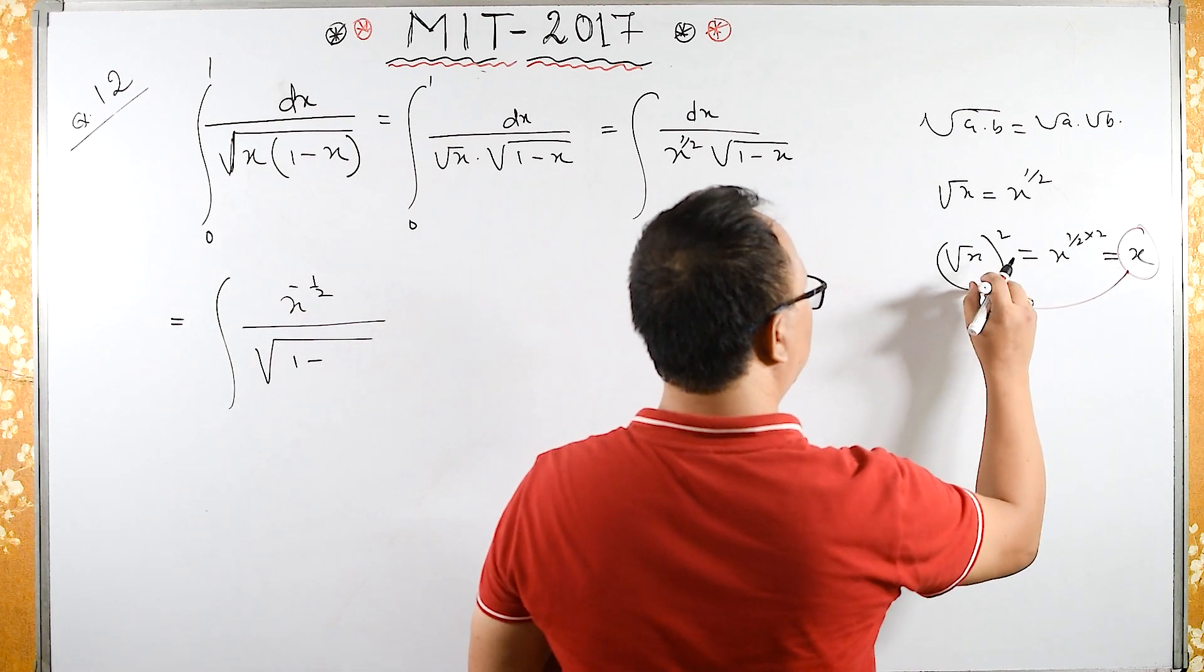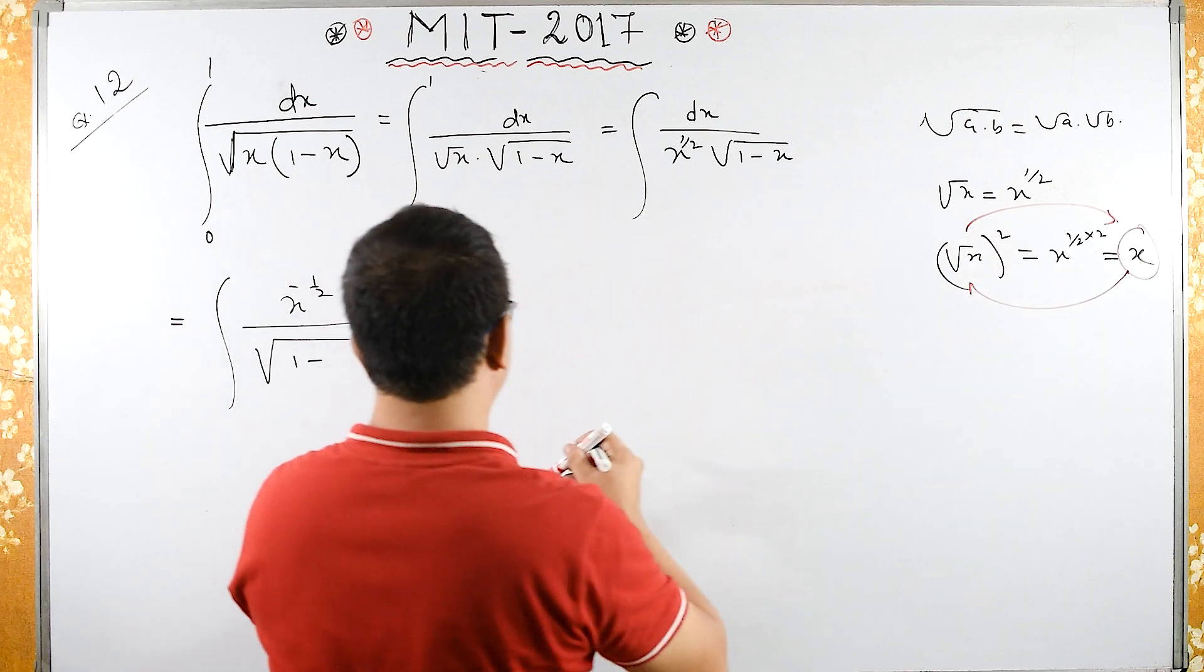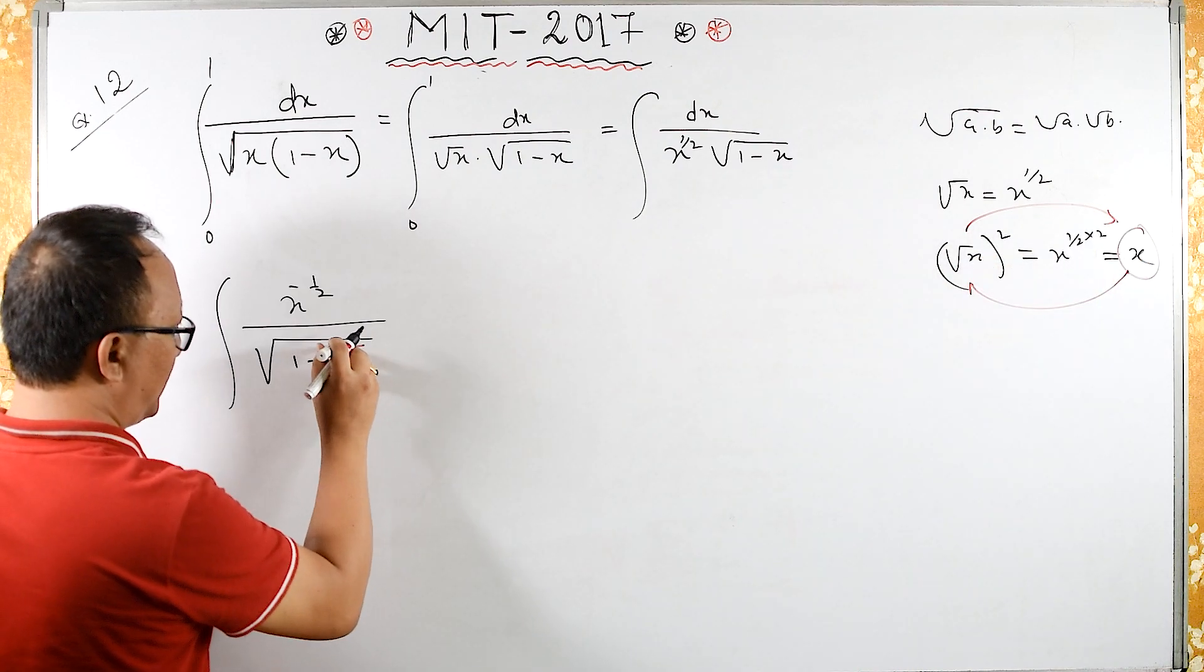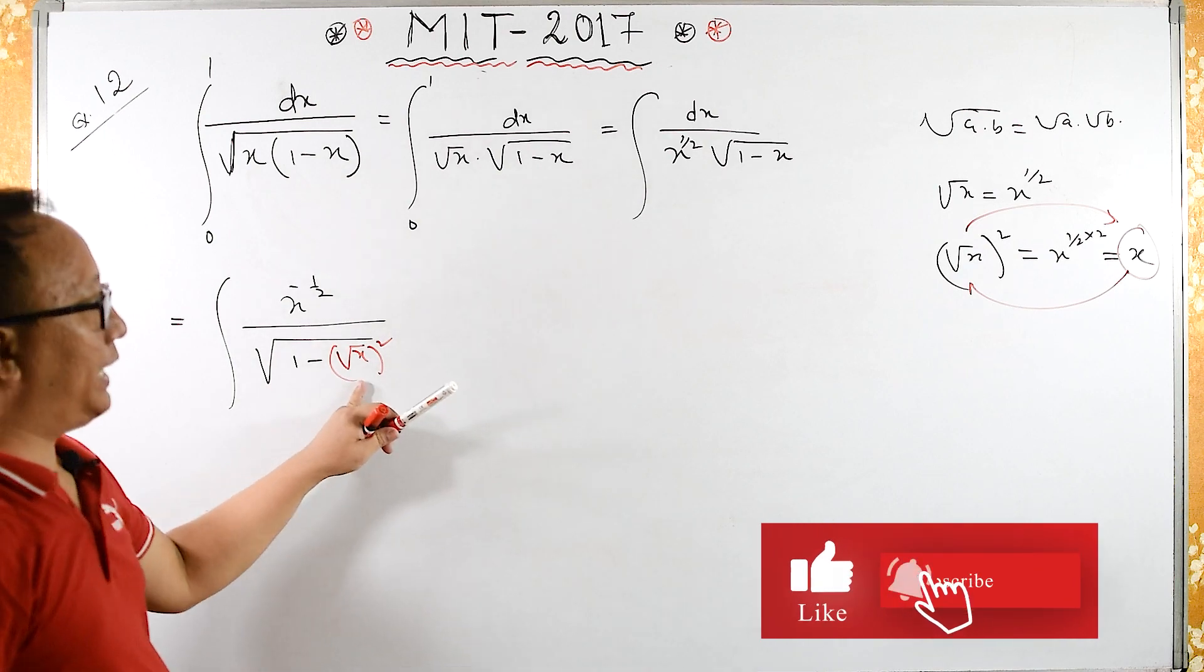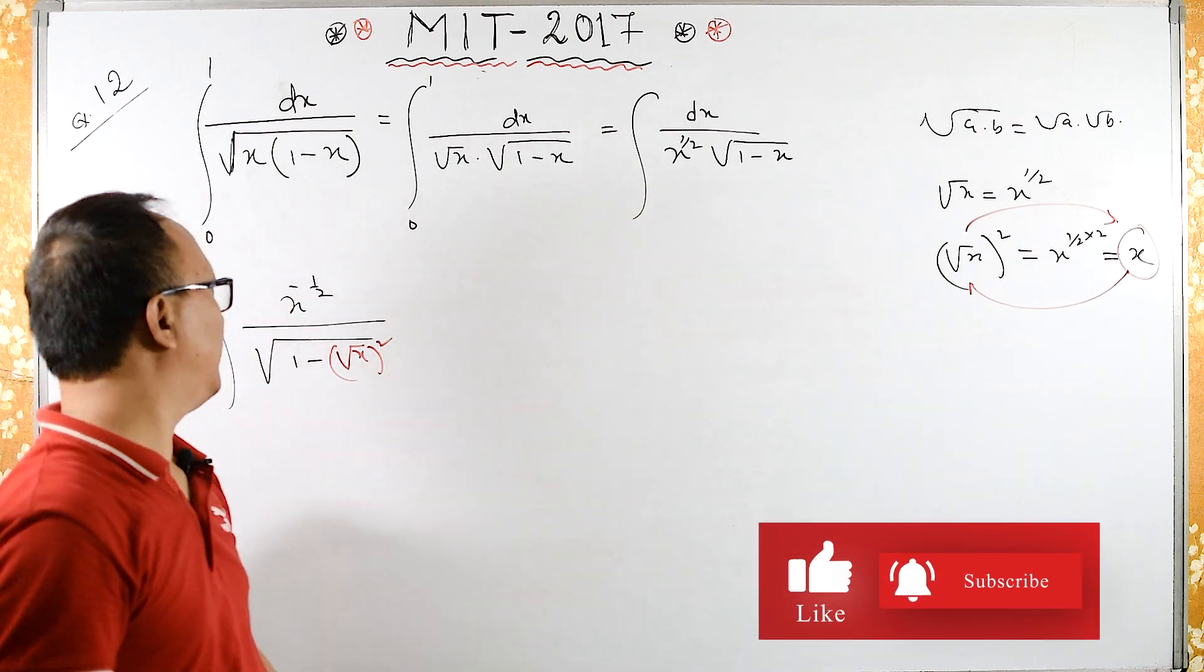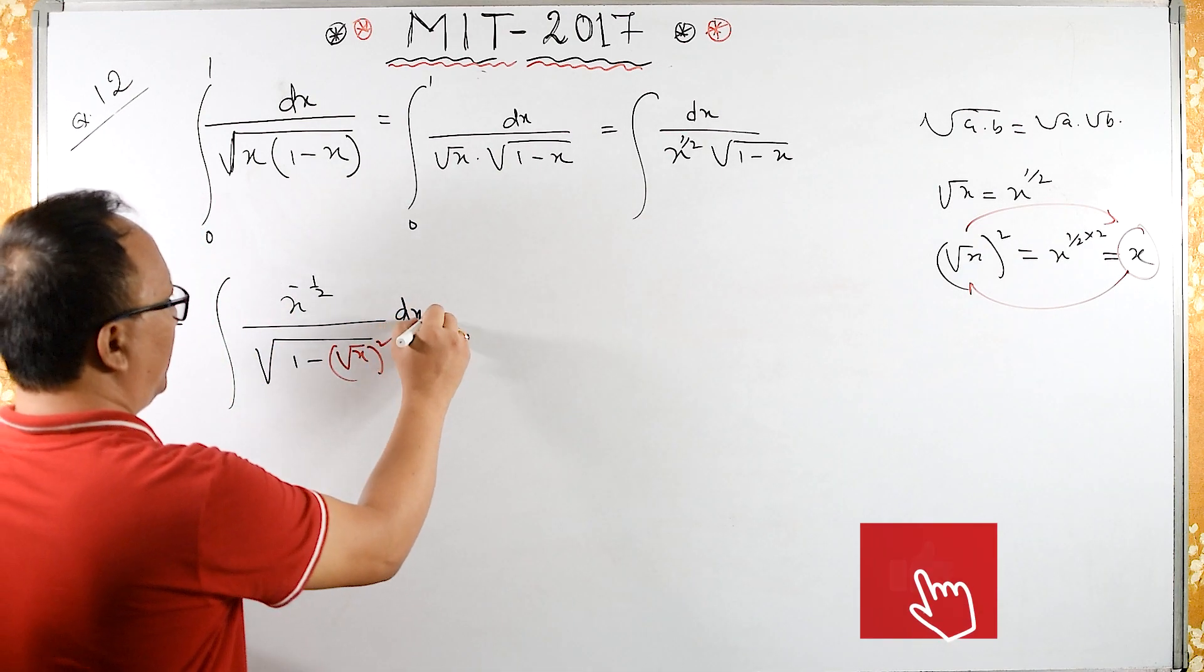This is also the same as square root of x the whole squared, which is the same as x times dx.